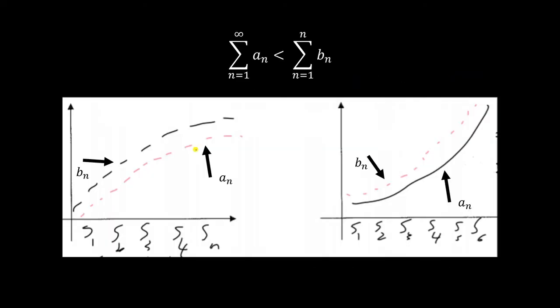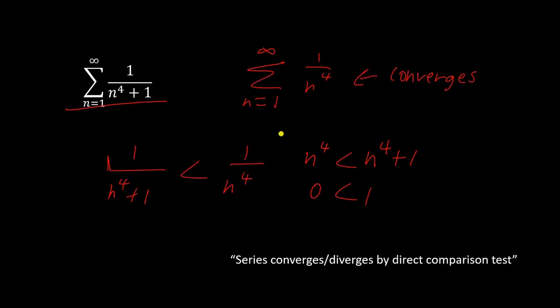Going back to the graph, 1/n⁴ is the black one and 1/(n⁴+1) is the pink one. Our series, which is a_n, is always smaller than the one that converges, b_n, so our a_n always converges as well. As you can tell, it's really handy to memorize whether some common series converge or diverge to effectively use the direct comparison test.